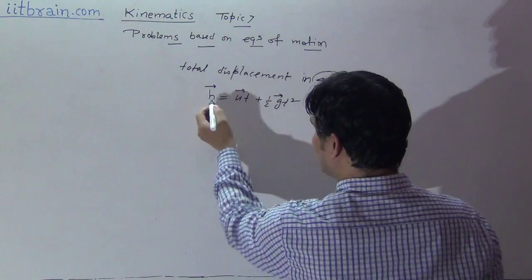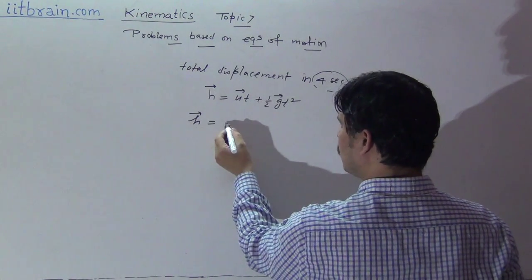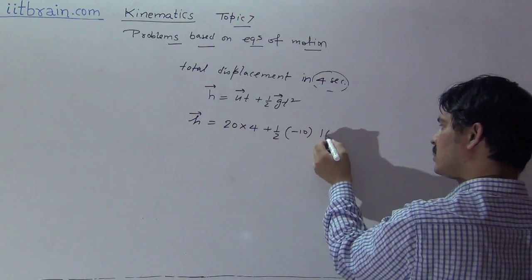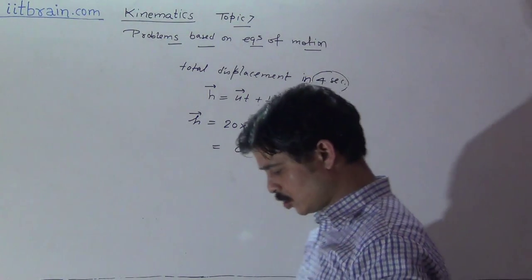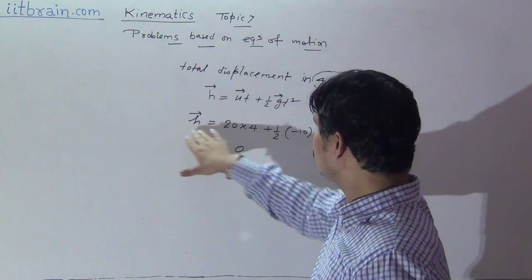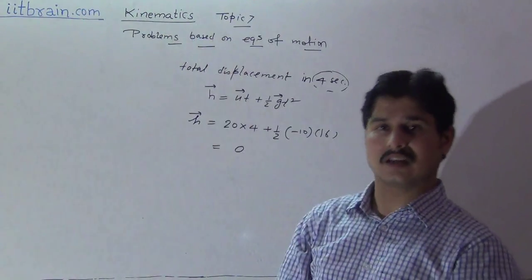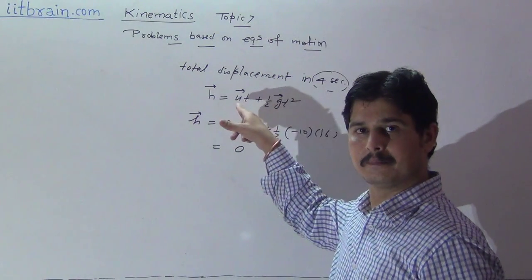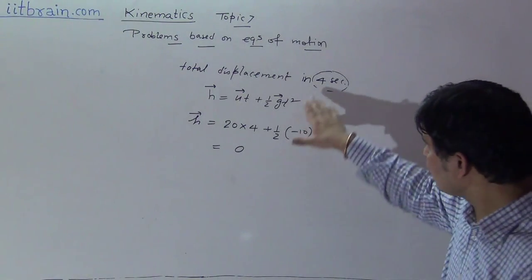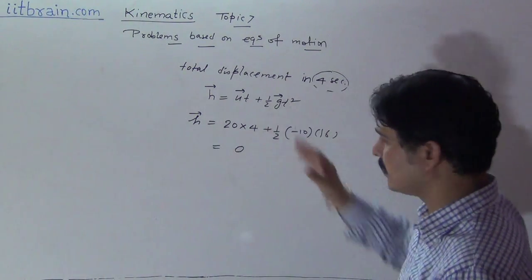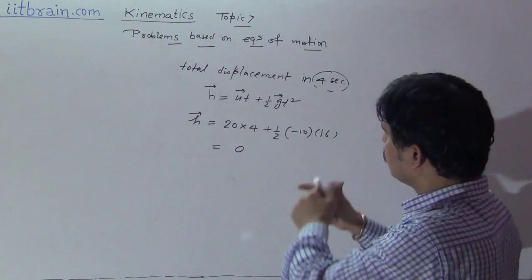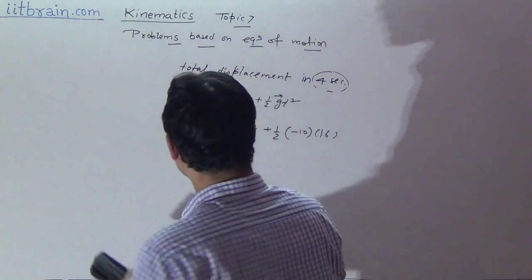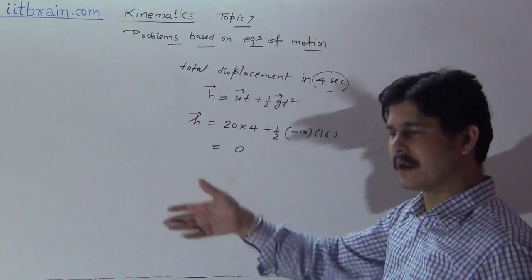For example, if we calculate total displacement for 4 seconds in the same problem, h equals u times 4 plus half times minus 10 times 16, which gives 80 minus 80 equals 0. This confirms that after 4 seconds the particle returns to its starting point. The equation automatically handles the return journey. Galileo's equations are auto-set vector equations — you do not need to break the calculation at the turning point.